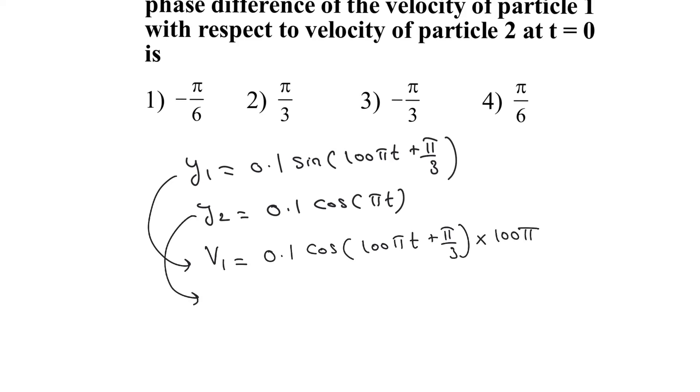Similarly, differentiating the second equation, we get the velocity of the second particle, which is 0.1 times the differentiation of cos theta. This gives minus sin(πt).